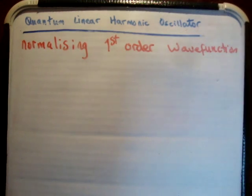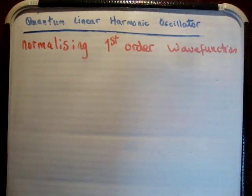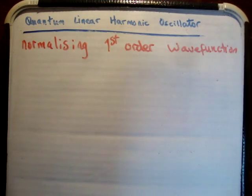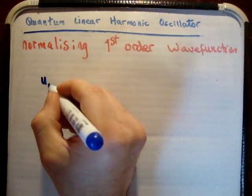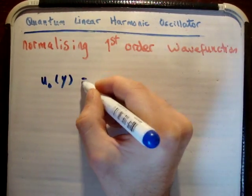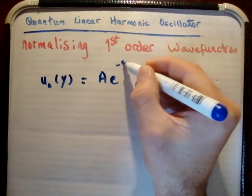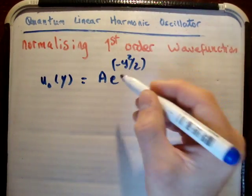Okay, in this video I'd like to show you how to normalize your first order wave function. So in a previous video, and I called it the lowest energy wave function, we worked out that u0 of y was equal to a constant A times e to the minus y squared over 2. And this was our lowest order wave function.